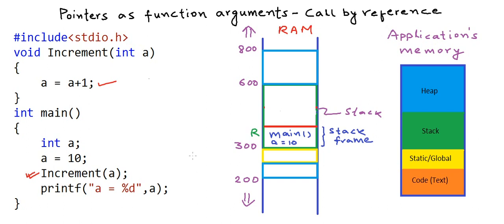The next statement in main is a call to printf, which is a library function. This structure — where the currently executing function sits at the top — is called the call stack. This stack is fixed in size, so if one function keeps calling another function indefinitely, as in the case of infinite recursion, the stack memory will overflow and the program will crash.